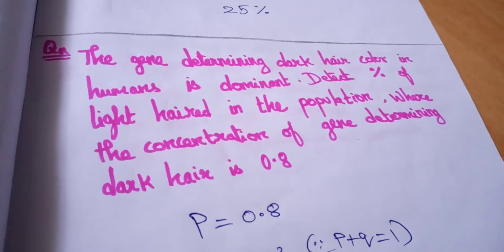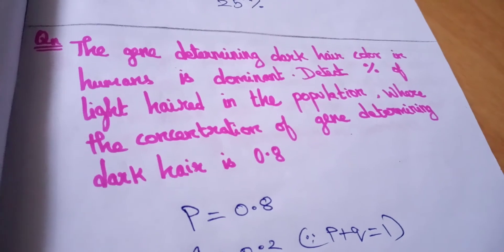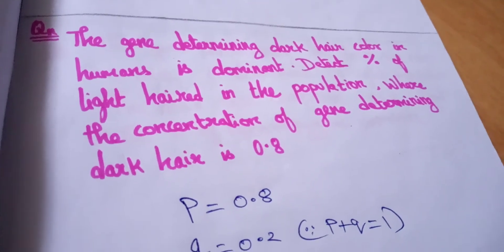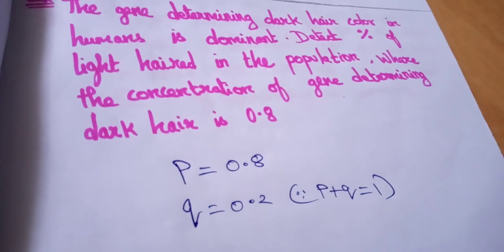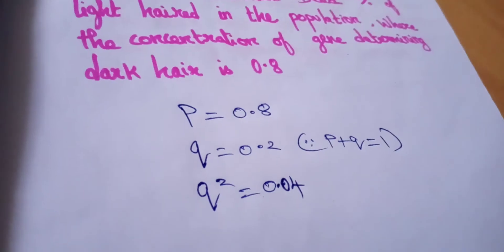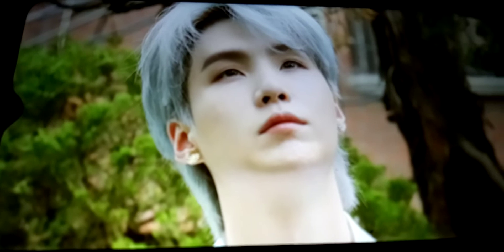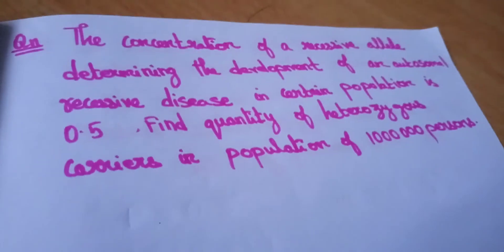We want light hair population. Population is people, so Q square. And this is our dark hair, this is our light hair. Let's move on to the next type of question.